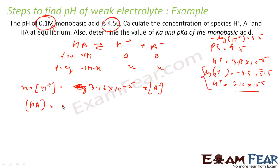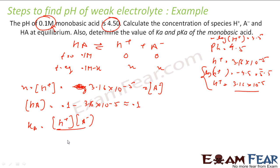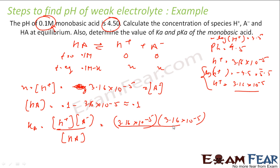The concentration of HA = 0.1 − x = 0.1 − 3.16×10⁻⁵, which is approximately equal to 0.10 M. Now Ka = [H⁺][A⁻] / [HA] = (3.16×10⁻⁵)(3.16×10⁻⁵) / 0.1. Solving this gives Ka = 1×10⁻⁸.